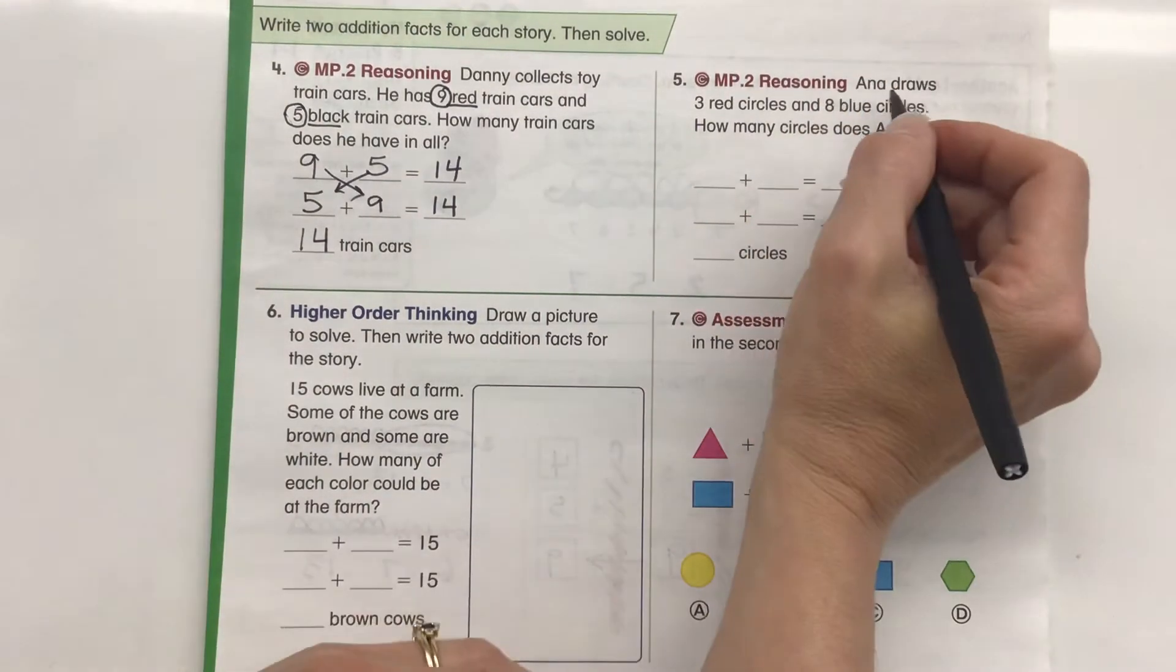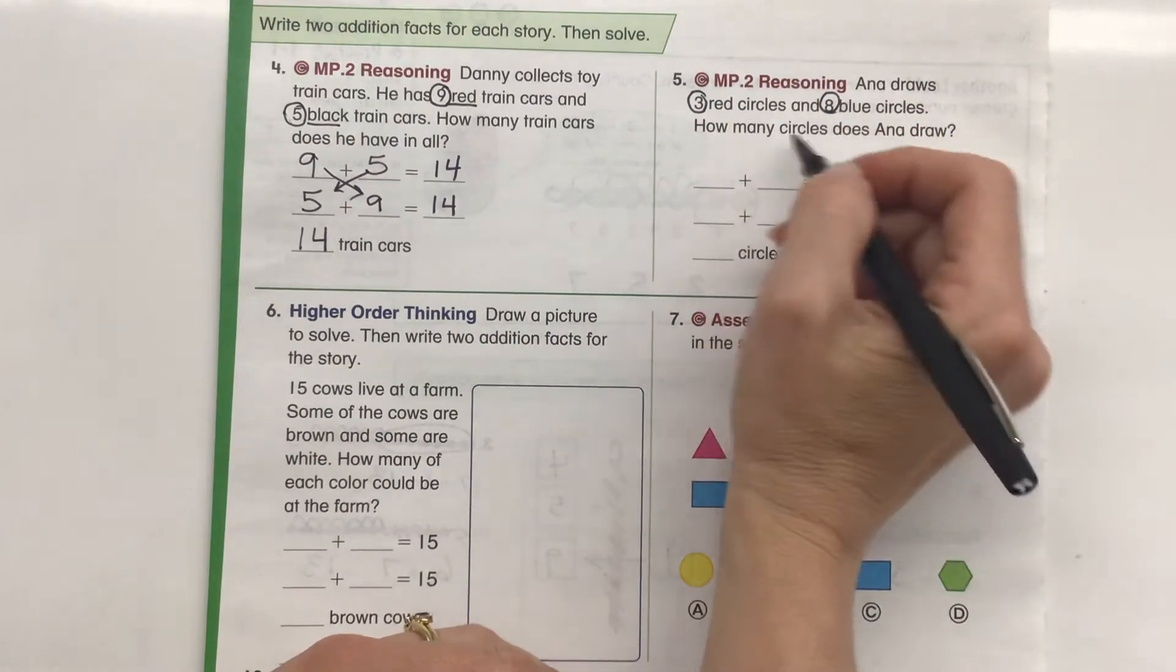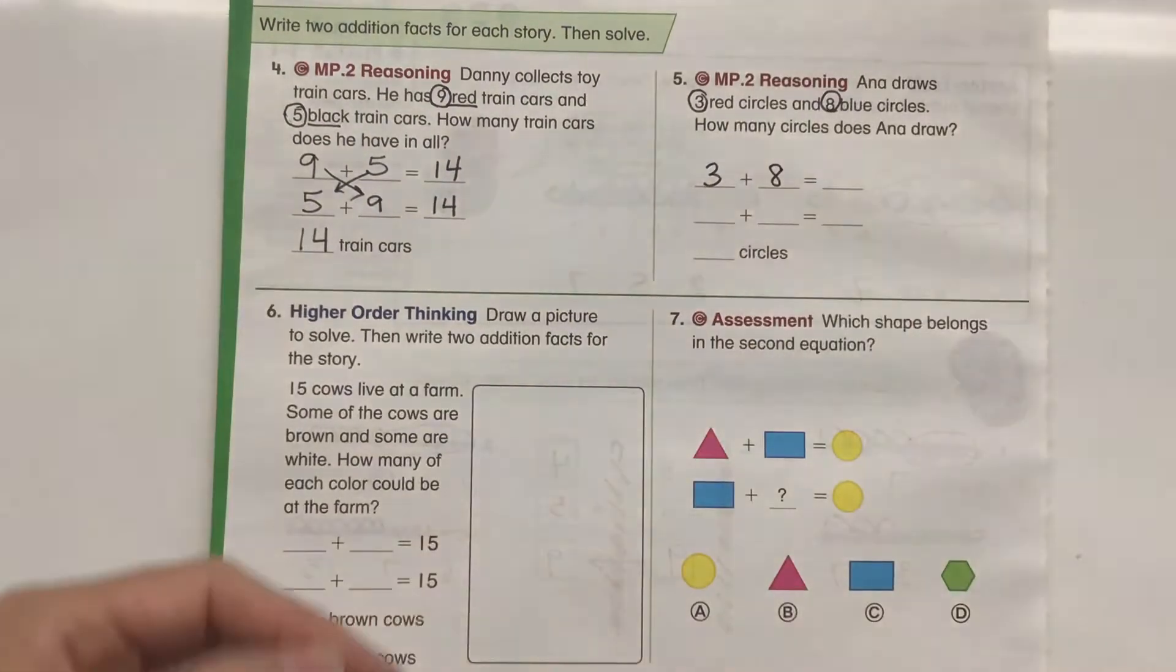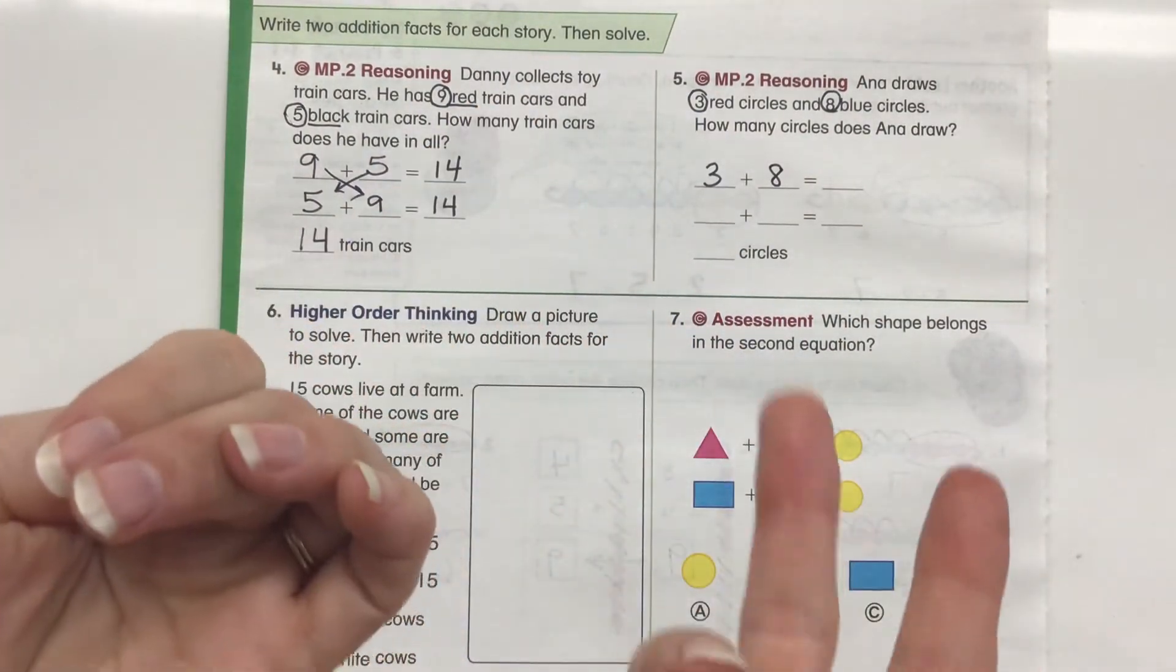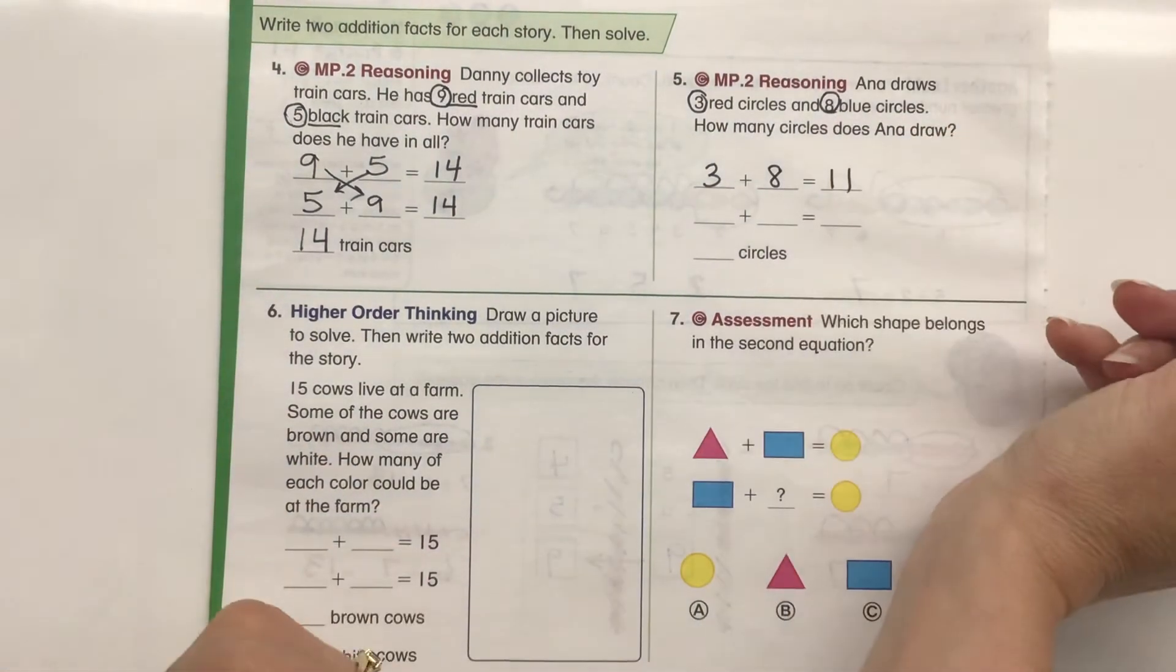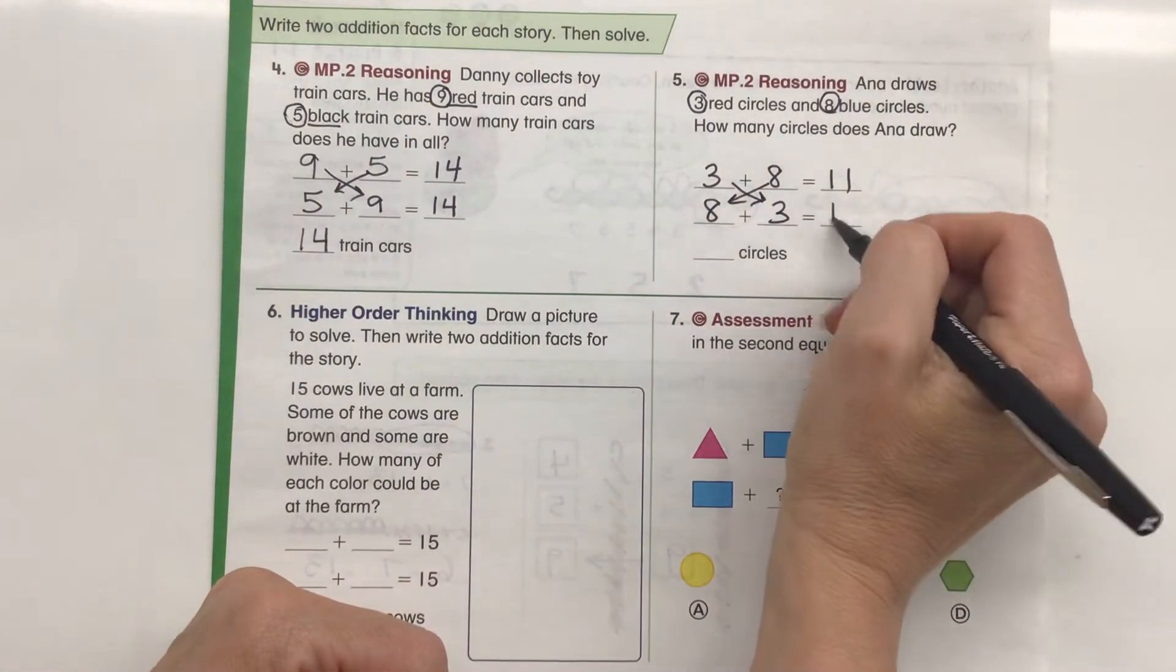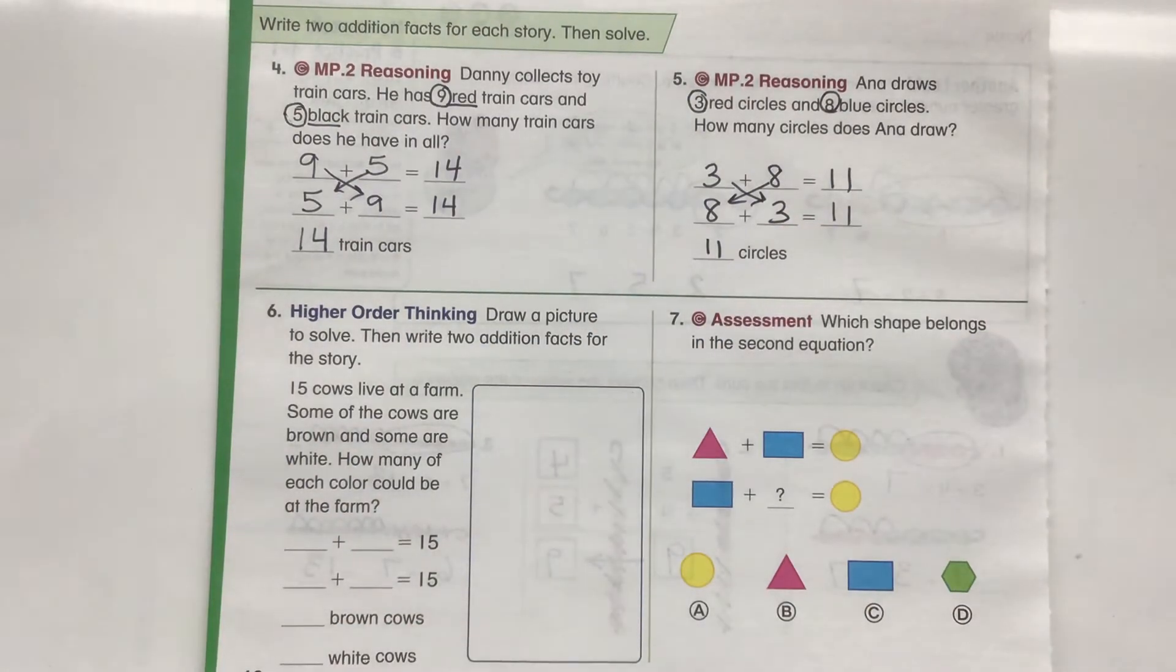Let's look at number 5. Anna draws 3 red circles and 8 blue circles. How many circles does Anna draw? Well, we're getting our total. So 3 red circles plus 8 blue circles. 3 plus 8. I can put up 8 fingers: 3, 4, 5, 6, 7, 8, 9, 10, 11. So I know that is 11. Now watch. I'm not even going to use my fingers anymore. I'm going to switch my addends. I'm going to have 8 here. I'm going to put my 3 here. My sum is going to be exactly the same. And I have a total of 11 circles.